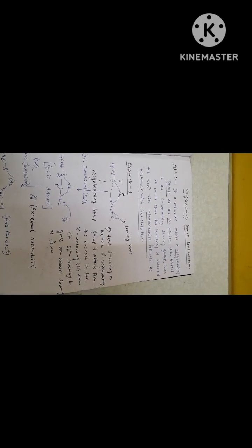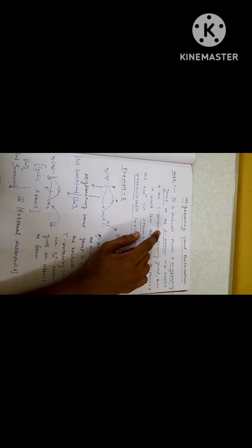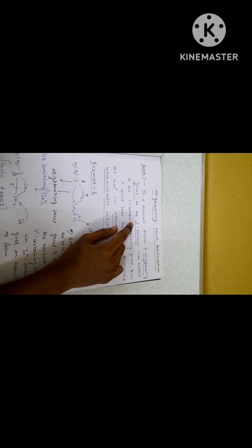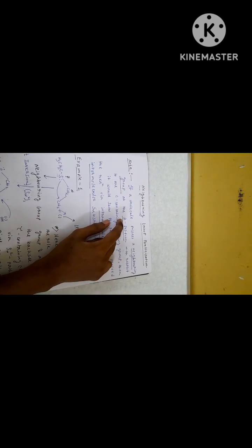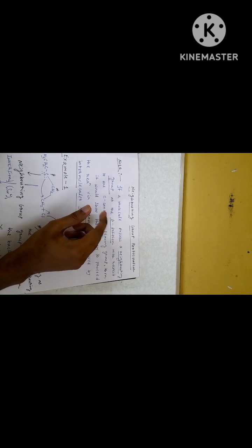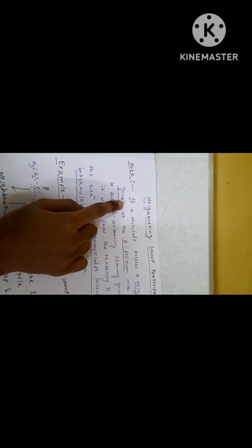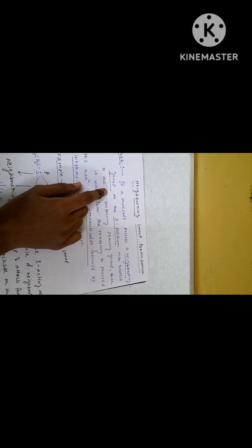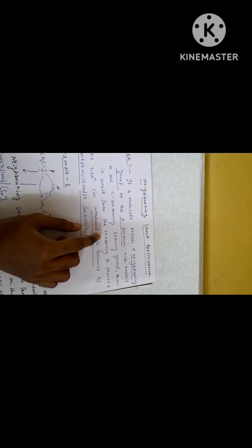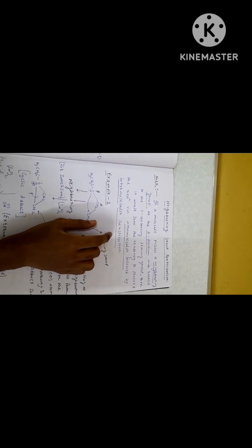Hello everyone, welcome to this YouTube channel Chemistry Lovers. Today I am showing you a new category of substitution chemistry which is Neighboring Group Participation. If a molecule possesses a neighboring group at the beta position with respect to the carbon containing the leaving group, it would show the tendency to proceed the reaction via intramolecular followed by intermolecular substitutions.